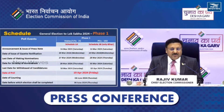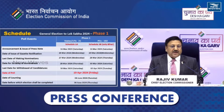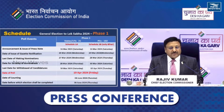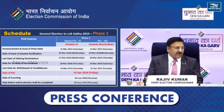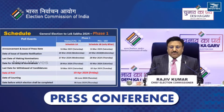Schedule of the Lok Sabha poll — Phase 1: we will do it in seven phases as was done last time. Phase one will start from 20th March notification — five days from now — last date of withdrawal would be 30th March, and date of poll would be 19th of April.